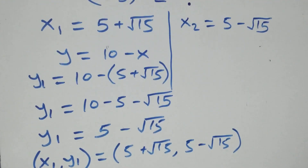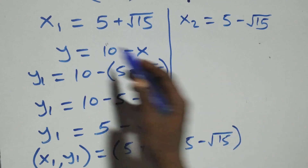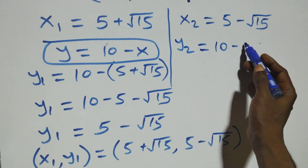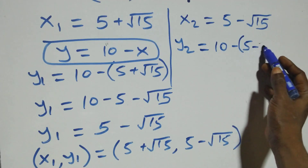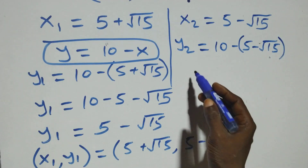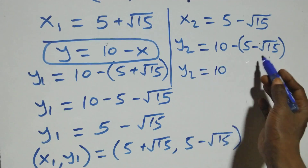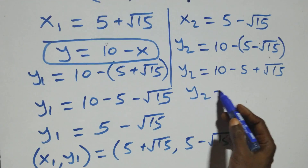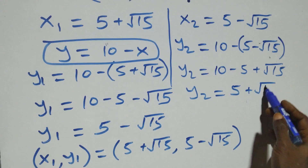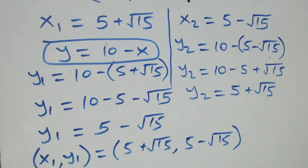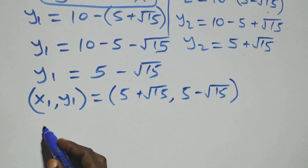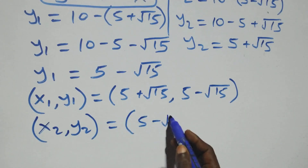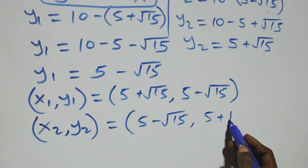For the second solution, y2 equals 10 minus x2, which is 10 minus (5 minus root 15). This gives y2 equals 10 minus 5 plus root 15, so y2 equals 5 plus root 15. The second set of solutions is x2 comma y2 equals (5 minus root 15, 5 plus root 15).